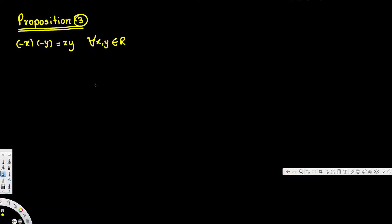In this video, we are going to see how to prove proposition number three. Proposition number three says negative x times negative y is equal to xy. First, we are going to use proposition number one — I made a video on that too — and also I'm going to use a list of axioms to prove this one. You can watch the list of axioms in a video; I put the link in the description.